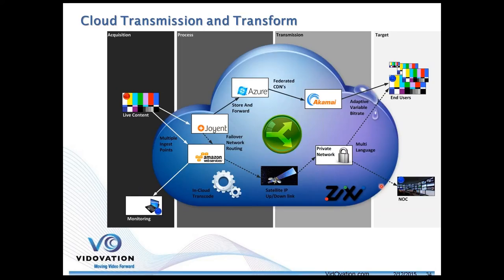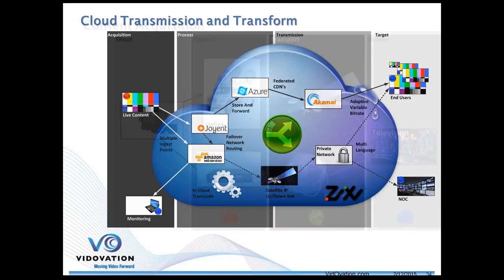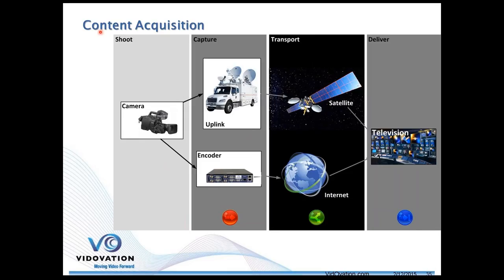Another cloud transmission platform example shows live acquisition pushed to the cloud via Amazon, Azure, and other providers, then pushed back out for monitoring. We can take a path through satellite and private networks to reach the end user and the network operations center, or push through CDNs and Akamai to reach end users. The Zixi ecosphere manages all the distribution and different paths for your content.